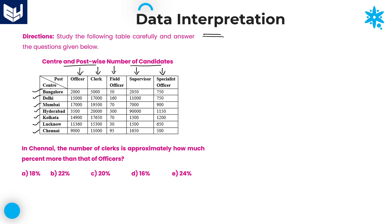There are a total of seven centers and five different posts. All the values represent the number of candidates working in that particular center. For example, this 2,000 is the number of officers in Bangalore, and 15,000 is the number of officers in Delhi. Likewise, 5,000 is the number of clerks in Bangalore — all these are number of persons.